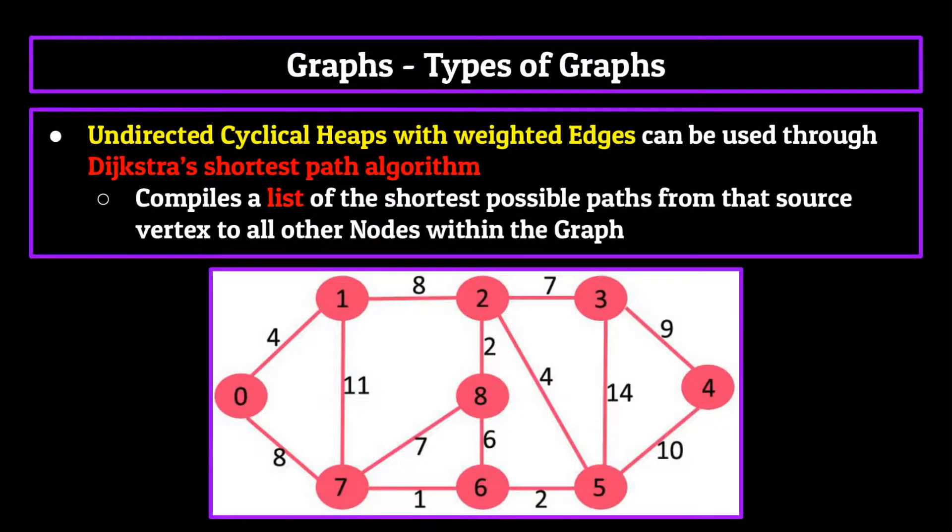Probably the most famous implementation of the graph data structure is through the undirected cyclical graph with weighted edges. This is through its use in Dijkstra's shortest path algorithm. This algorithm, given a graph and a source vertex within that graph, can find a list of the shortest possible paths from that source vertex to all other nodes within the graph.